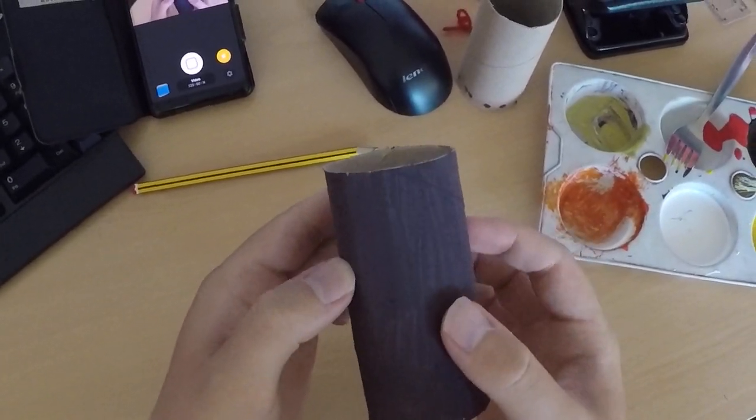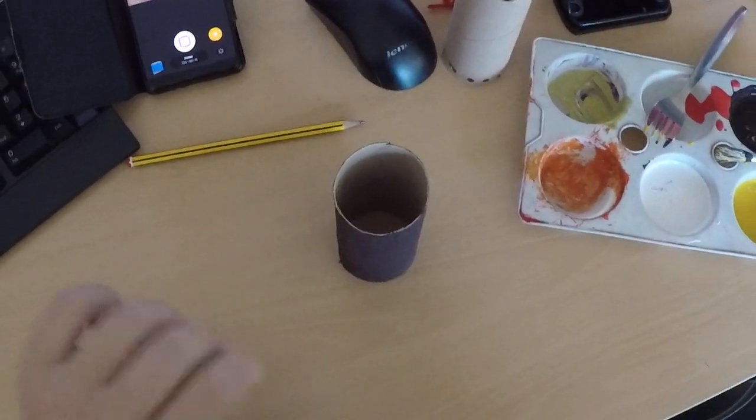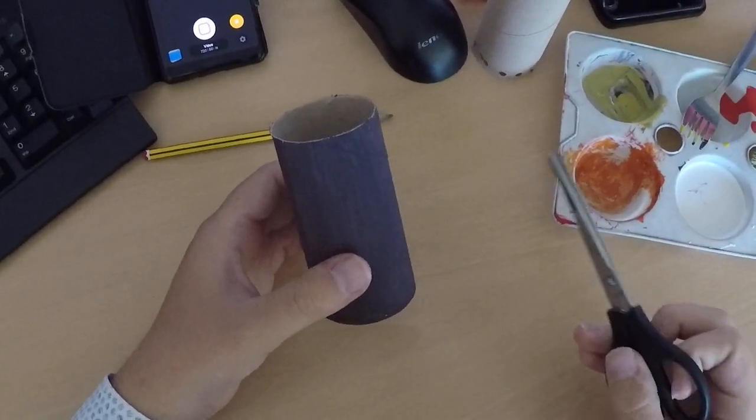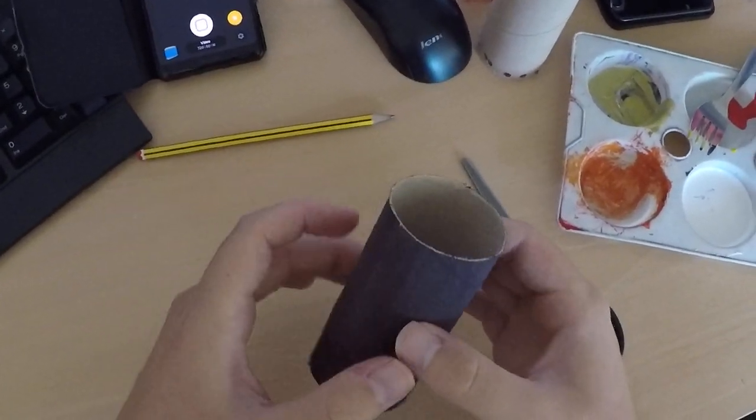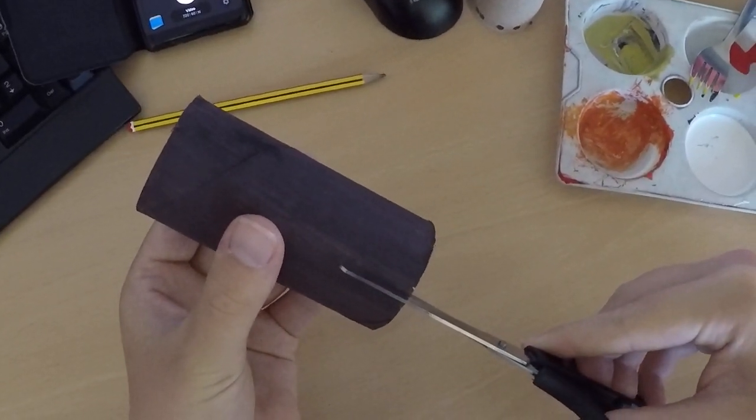This is going to be our octopus body and the first thing we want to do is take his top and just put, once we've painted it, four little cuts down our top here.